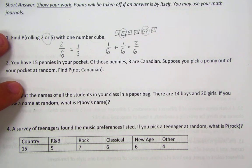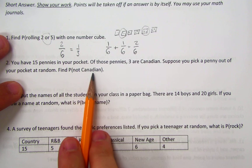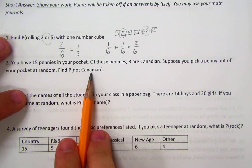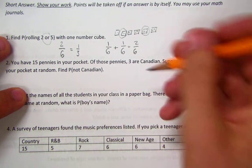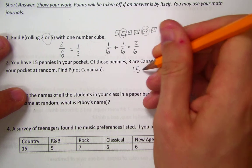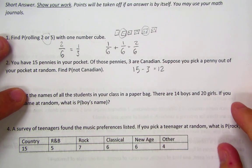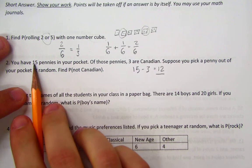Number 2: I have 15 pennies in my pocket. Of those pennies, 3 are Canadian. Suppose I take a penny out of my pocket at random and find the probability of the penny not being Canadian. There are a couple of different ways of doing this. You could use subtraction. You know that there are 15 pennies and 3 are Canadian, and do it that way and figure out that there are 12 pennies that are not Canadian, and put that over the denominator, which is the total number of pennies, 15.